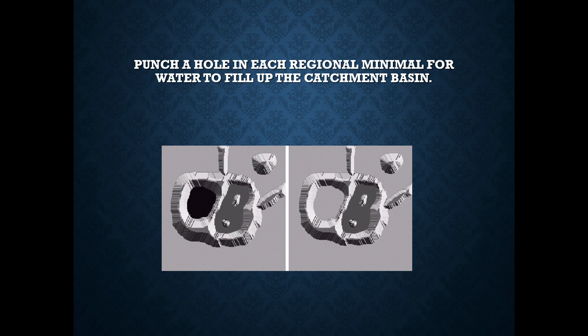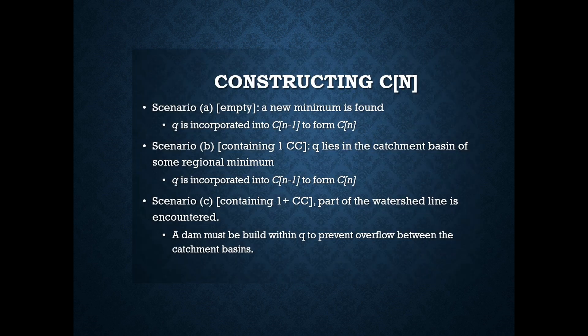We punch a hole in each region minimum for water to fill up the catchment basin. We have three kind of scenarios where a new minimum is formed. Q is incorporated into C of M-1 to form C of M, and it is one containing one CC. CC is corpus callosum, a set of neural fibers in the cerebral cortex responsible for facilitating intrahemispheric communication.